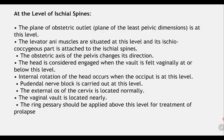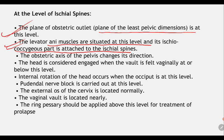At the level of the ischial spines, the plane of obstetric outlet is the plane of least pelvic dimension. The roof is formed by the plane of least pelvic dimension and the floor by the anatomical outlet. The levator ani muscle is situated at the level of the ischial spine and the iliococcygeal part is attached to the ischial spine. The obstetric axis of the pelvis starts changing its direction from the ischial spine level.